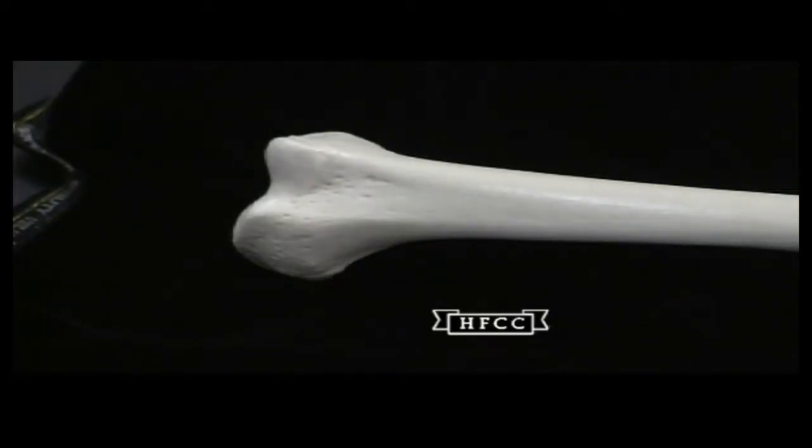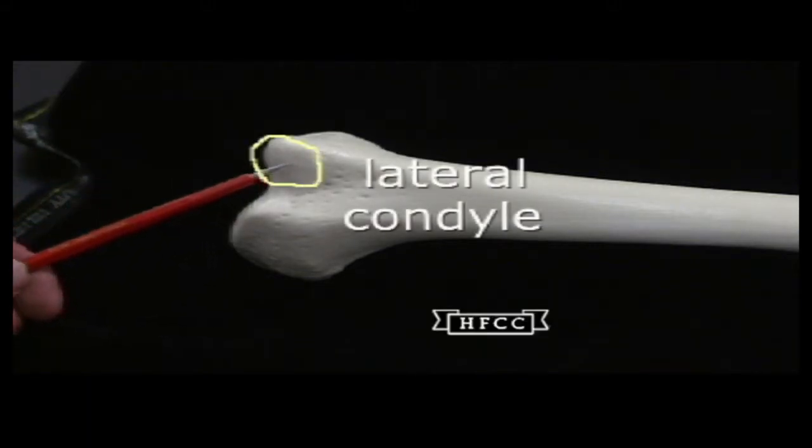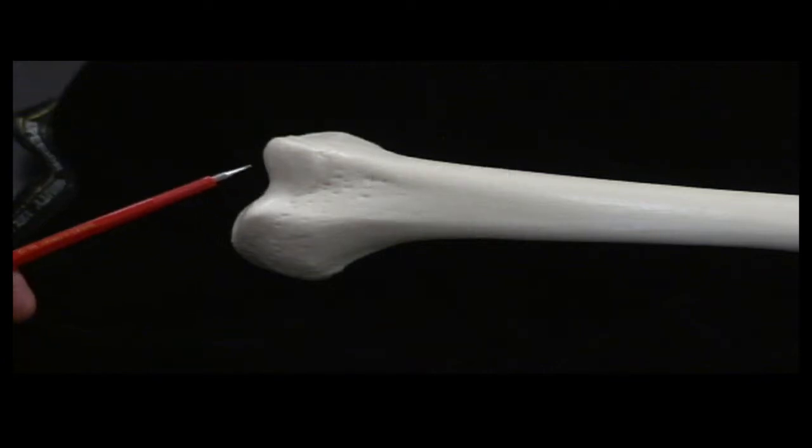Now as I move the video camera down to the distal end of an anterior view and looking at its structures. The flat or smooth surface here rather is the lateral condyle. It articulates with the tibia on this distal end.